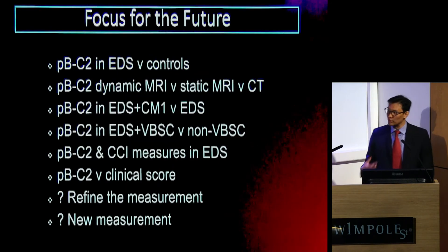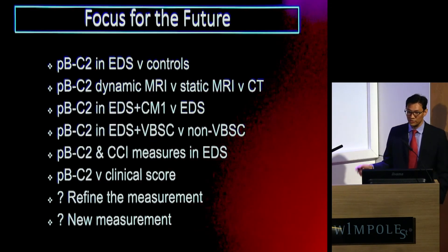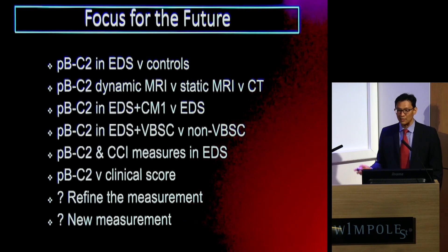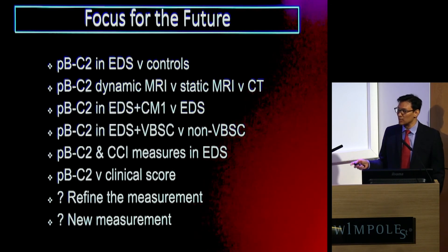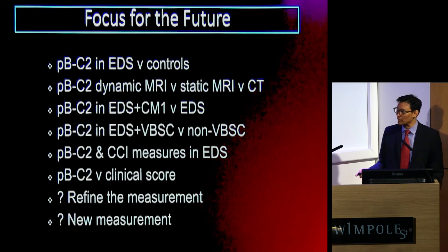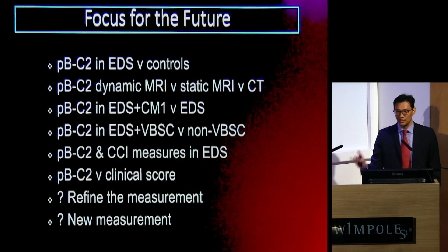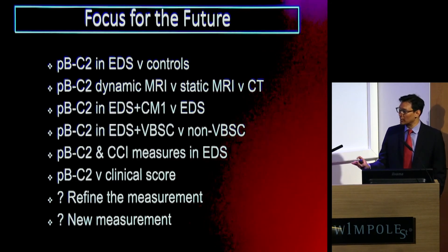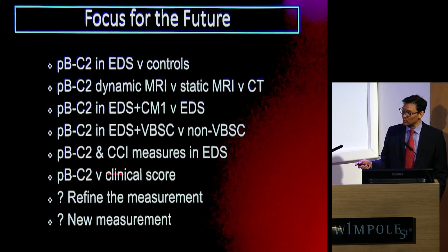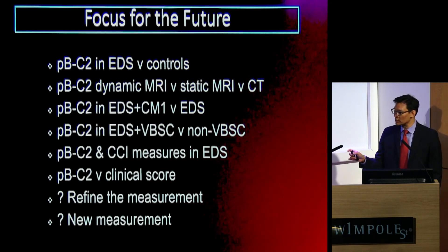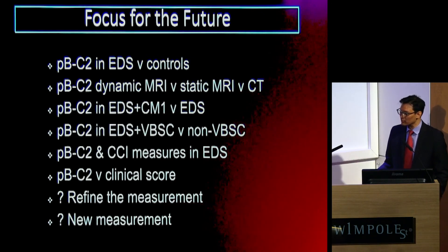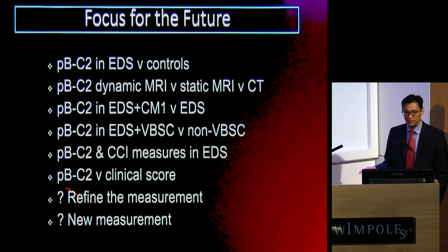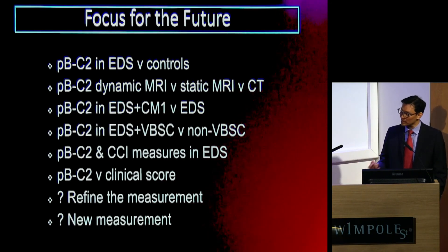Moving forward, the opportunities really are in developing research to address these issues. What does that measure mean in EDS patients versus controls? What does it look like with dynamic upright imaging versus static MRI or CT morphometrics? How does it compare in EDS patients with Chiari-1 versus EDS patients without Chiari-1 malformations? And you can extend that to those with a clear ventral brainstem compressive syndrome versus those without. You can look at how the Grabb-Oaks measurement interacts with other morphometrics like cranioservical junction measurements, especially in the context of cranioservical instability, and how that correlates with clinical outcomes and scores.